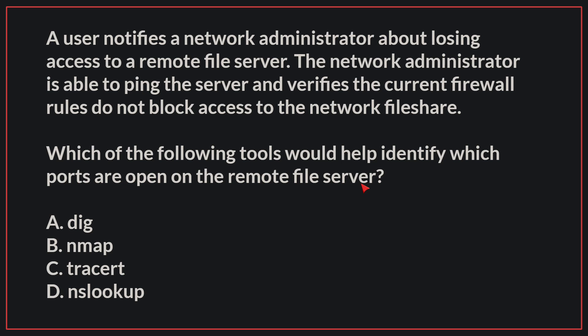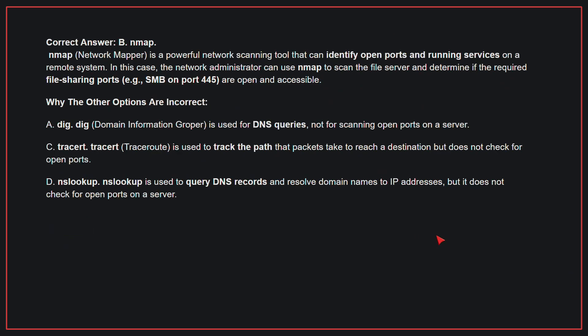A user notifies a network administrator about losing access to a remote file server. The network administrator is able to ping the server and verifies the current firewall rules do not block access to the network file share. Which of the following tools would help identify which ports are open on the remote file server? The correct answer is B, NMAP. NMAP is a powerful network scanning tool that can identify open ports and running services on a remote system. The network administrator can use NMAP to scan the file server and determine if the required file sharing ports are open and accessible.